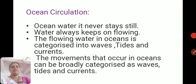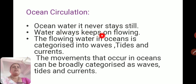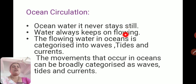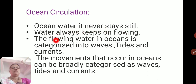Now, ocean circulation. Ocean water never stays still — water always keeps on flowing. This ocean water, sometimes in the form of waves, in the form of destructive tides, and in the form of currents, always keeps on flowing. The flowing water in oceans is categorized into 3 parts.